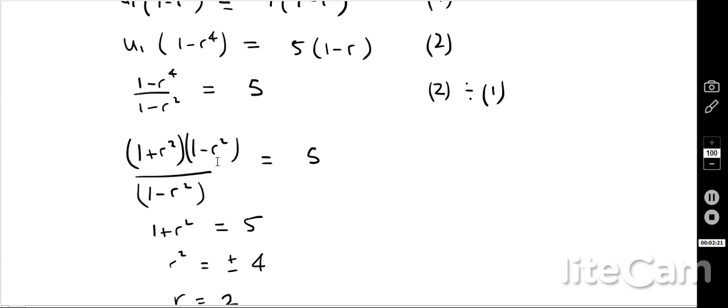And therefore, the 1 minus r squared will cancel out. So if I write it like that, I will end up with 1 plus r squared equals 5.